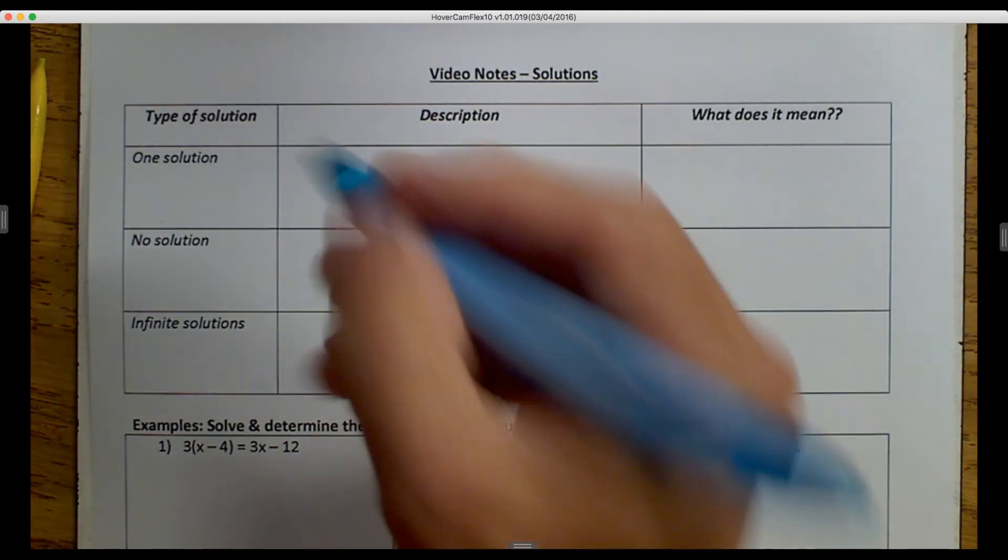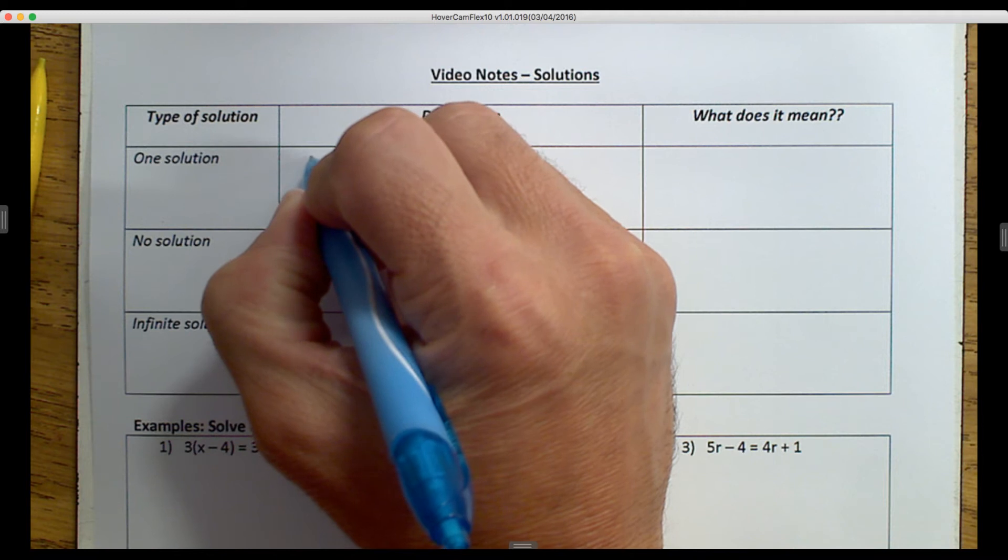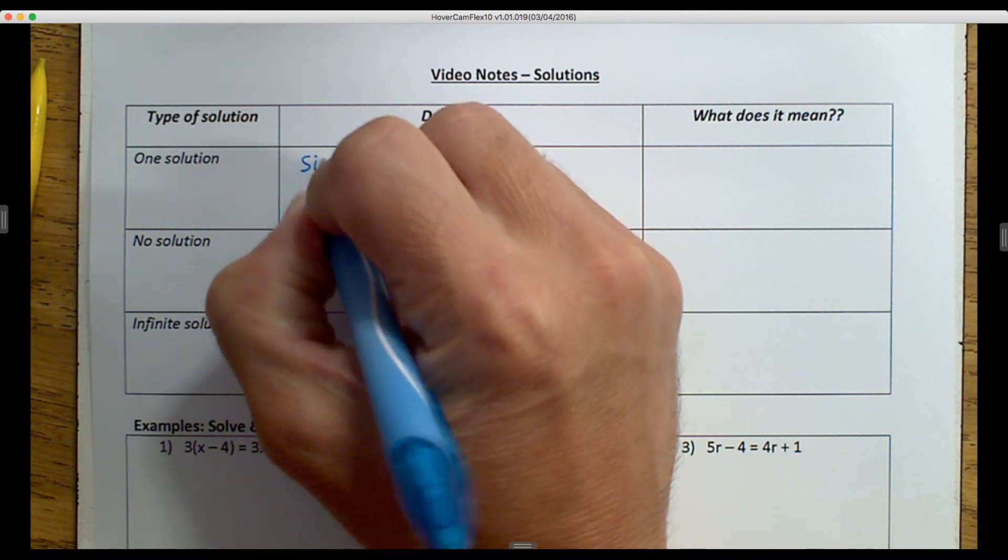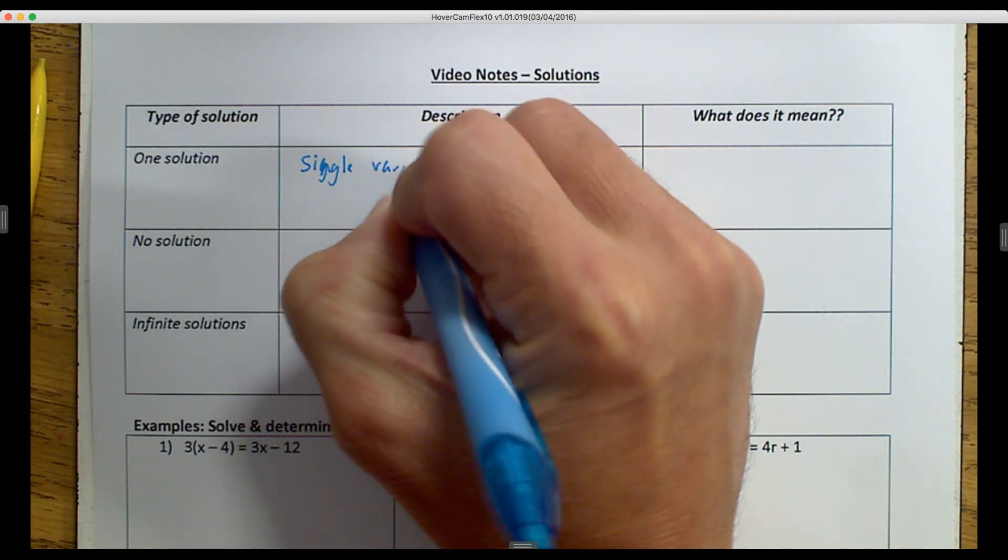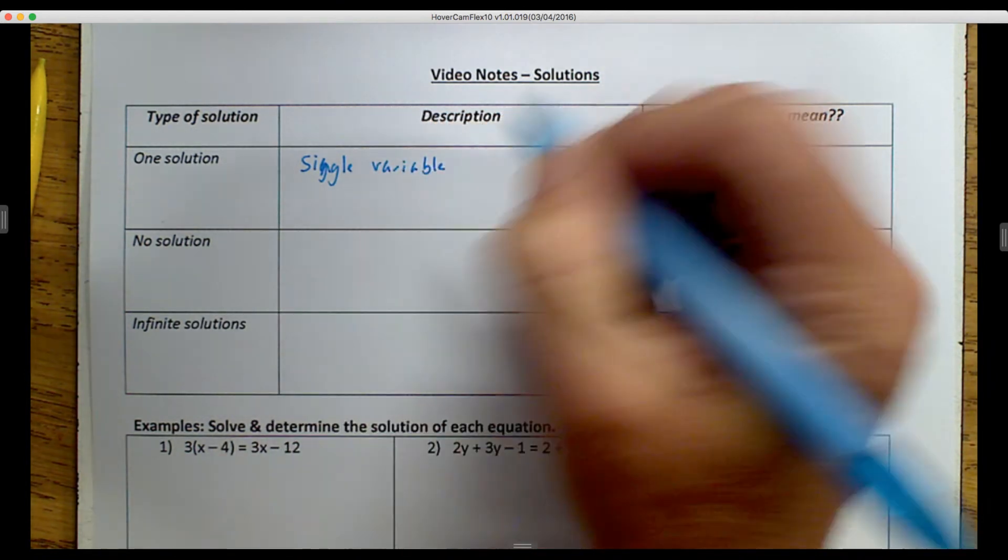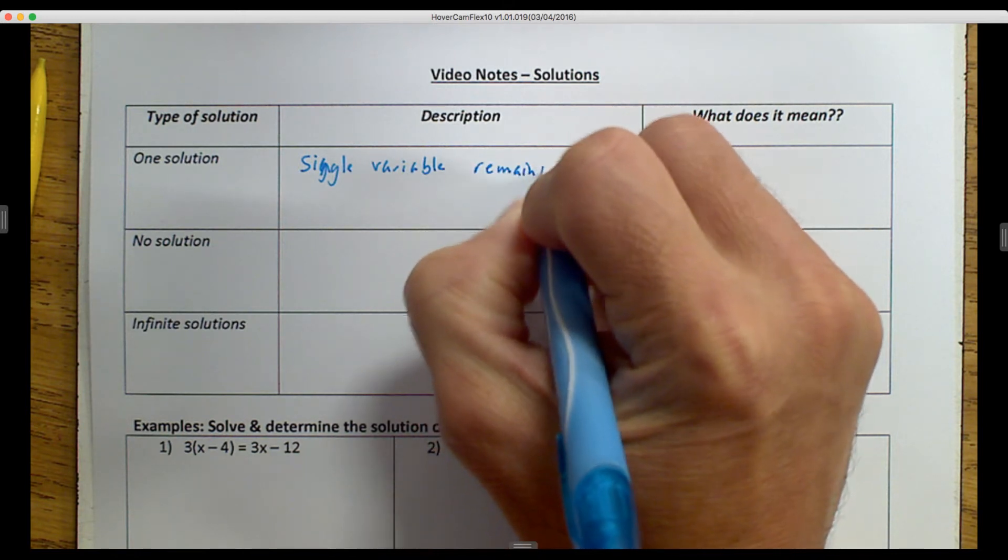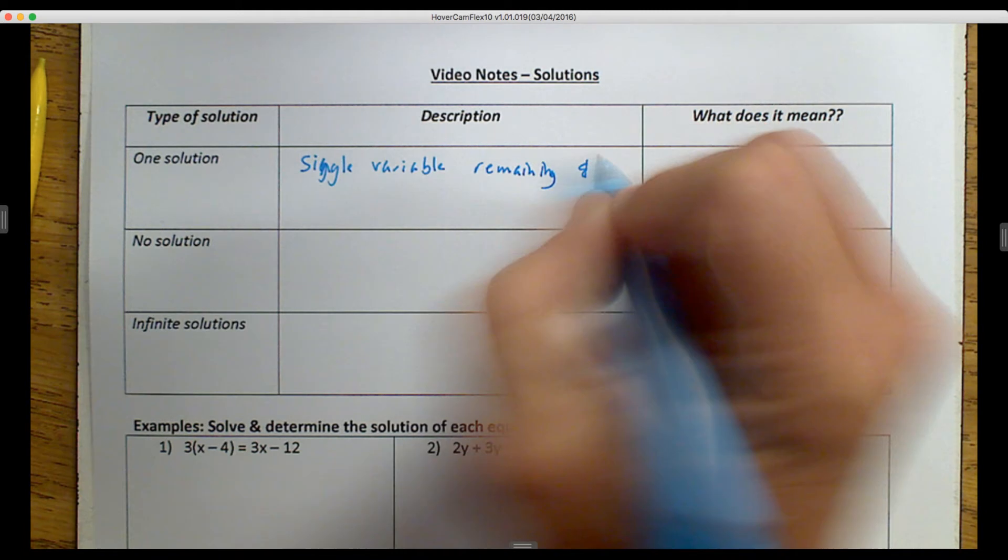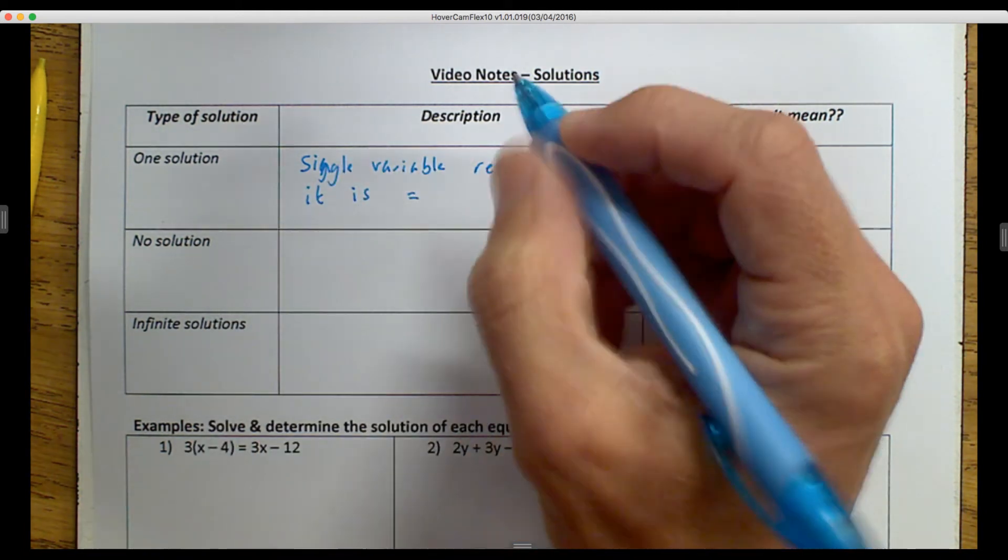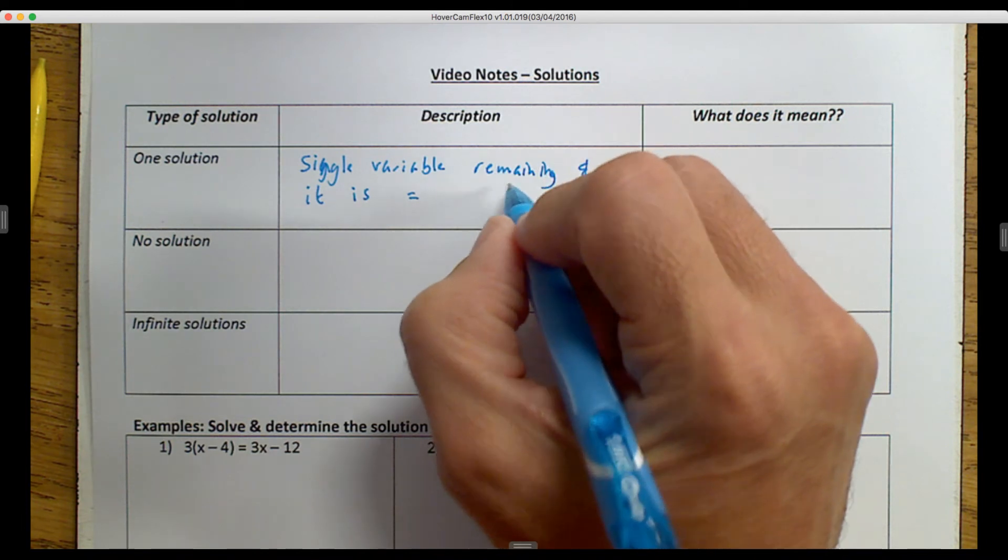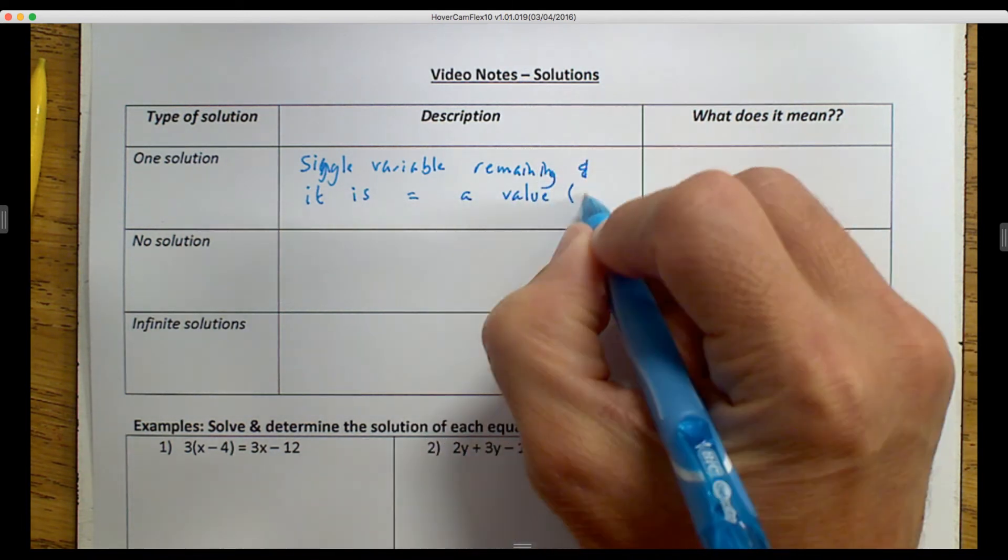So one solution is when, in the end, when you solve an equation, you have a single variable remaining, and it is equal to a value. And when I'm talking about a value, I'm talking about a number.